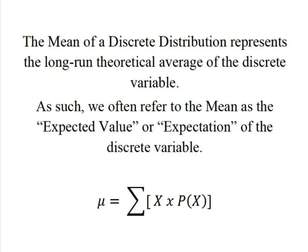So the mean of a discrete distribution really represents a long-run theoretical average of that discrete variable. In other words, if we were able to repeat the experiment over and over again an infinite number of times, this mean or expected value is what we would expect to see. Because of that we often refer to the mean as expected value or expectation of this discrete variable.